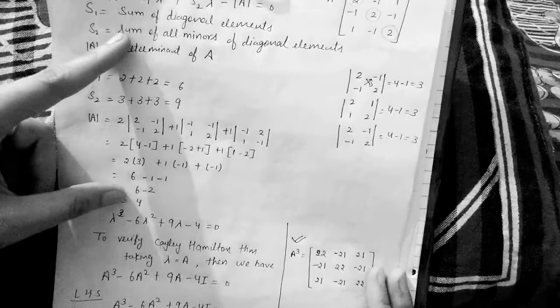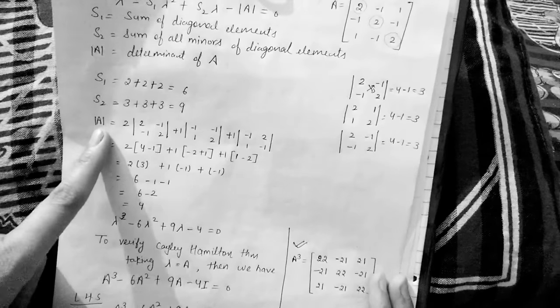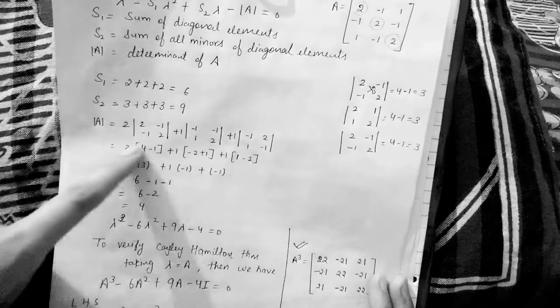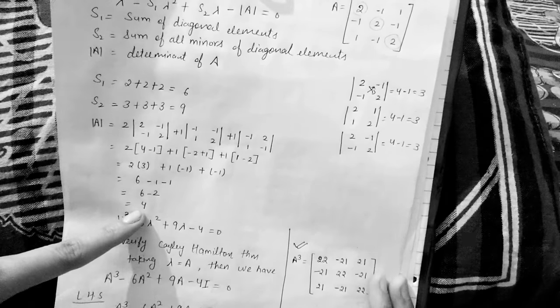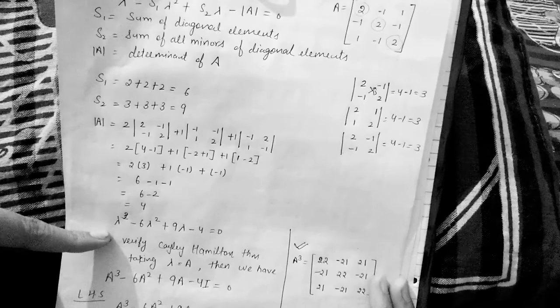Now we find the determinant of A. Expanding the first row, we get |A| = 4. Putting all three values — S₁ = 6, S₂ = 9, |A| = 4 — into the generalized equation, we get the characteristic equation very simply. This second method is much easier than the first, and both methods give the same answer, so you can use the second method if you feel comfortable.